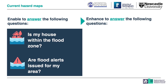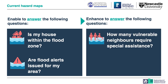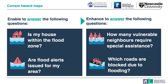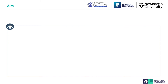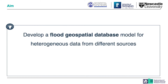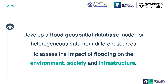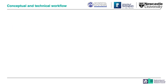Some of these questions include how many vulnerable neighbors require special assistance and which roads get blocked due to flooding. In order to answer those questions and understand the different impacts, we need a data model that enables this advanced analysis. Therefore, in this project we aim to develop a flood geospatial database model for heterogeneous data from different sources in order to assess the impact of flooding on the environment, society and infrastructure. In order to achieve this goal, we follow a conceptual workflow supported by geospatial elements.